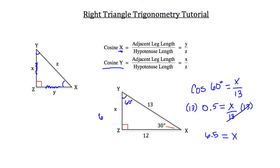So this length is 6.5. That's the value of using these trigonometric ratios — we can solve for missing pieces of a right triangle without having to use things like the Pythagorean theorem.